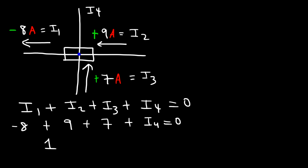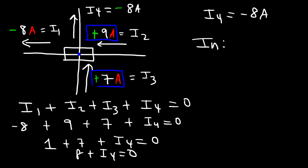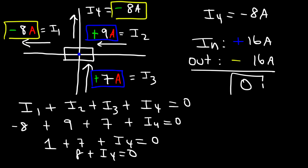Now let's calculate I4. Negative 8 plus 9 is positive 1, and 1 plus 7 is 8. So 8 plus I4 equals zero, which means I4 is negative 8. Because it's negative, the current is moving out from the junction. Total current flowing in is 9 plus 7, which is 16 amps. Total current leaving is negative 8 and negative 8, which is negative 16. The net current at the junction is zero.